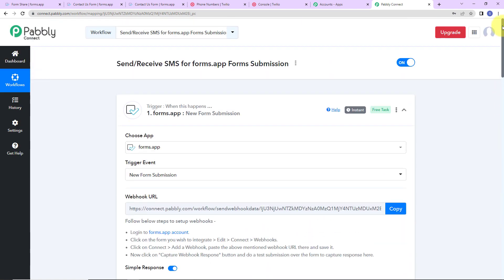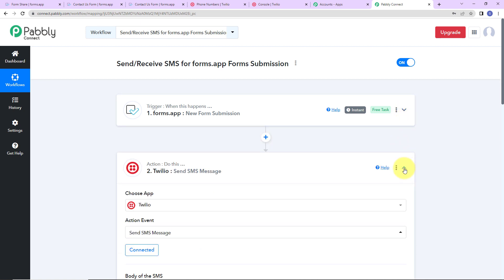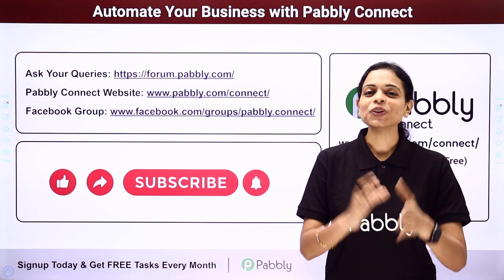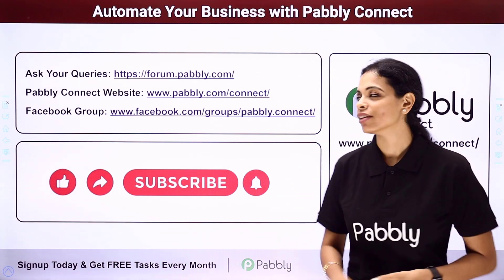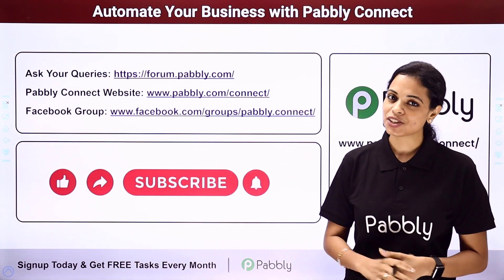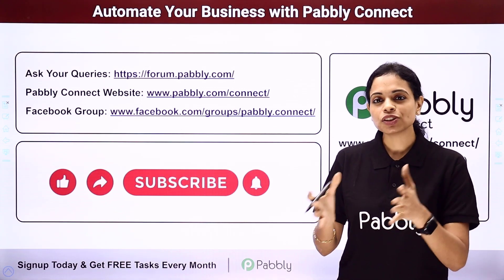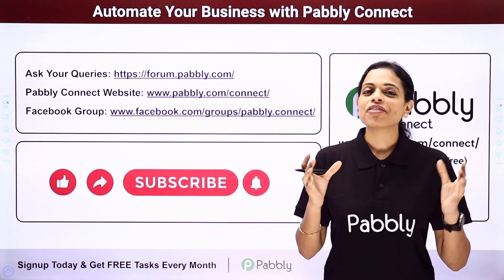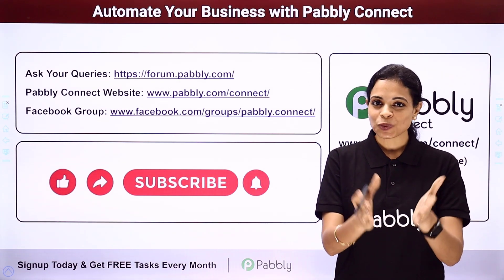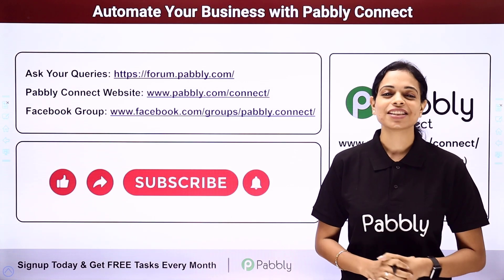Taking you back to Pably Connect to understand what we have done: our trigger application is forms.app where the event is new form submission, and our action application is Twilio where the event is send SMS message. If you have any doubt, you can refer to the workflow in the video description and also clone it to start immediately. You can integrate multiple applications using Pably Connect. To ask any queries, write at forum.pably.com or visit www.pably.com/connect. You can also visit our Facebook group for the latest updates. If you found this video helpful, share it with your friends and colleagues. Do not forget to like, share, and subscribe. Take care of yourself.